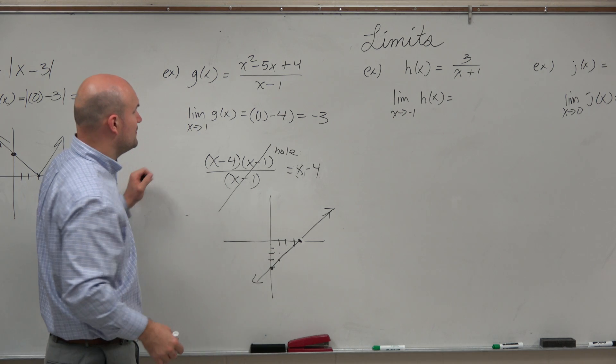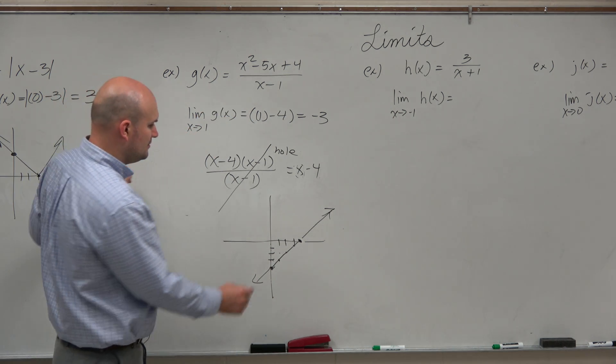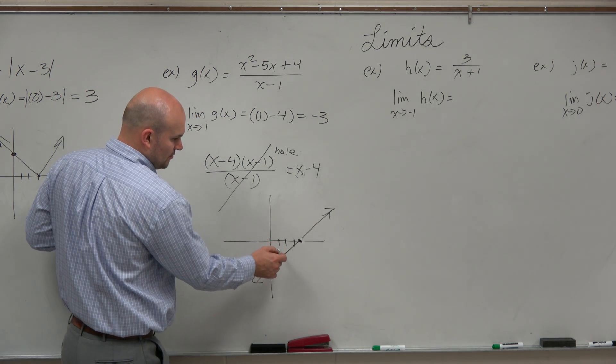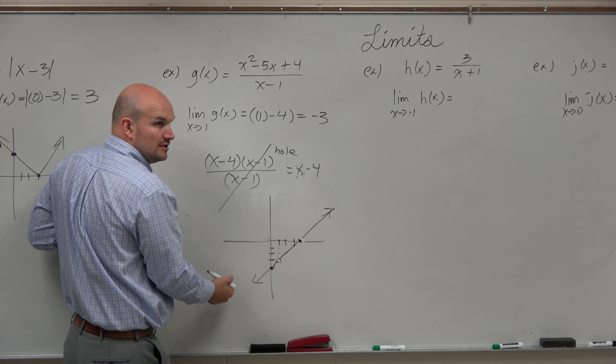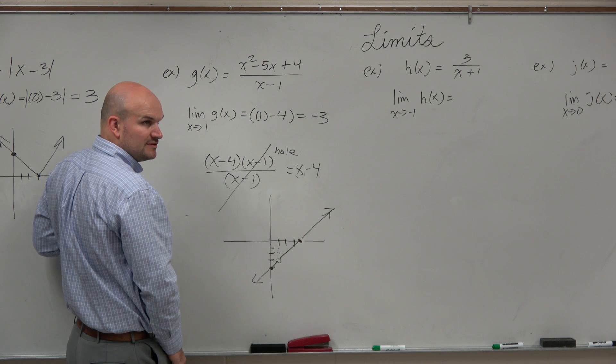But you guys can see the graph. And then if we want to evaluate where it is at 1, we go over to 1 - we'd say 1, 2, 3. Well, again, remember there's a hole there. But what are you approaching? You're approaching that value, right? And it's approaching the same value from the left and right.